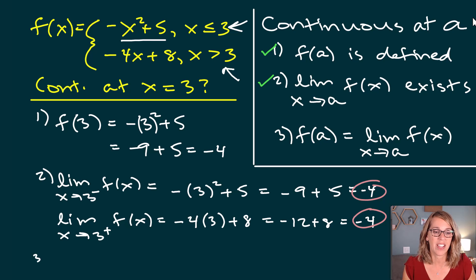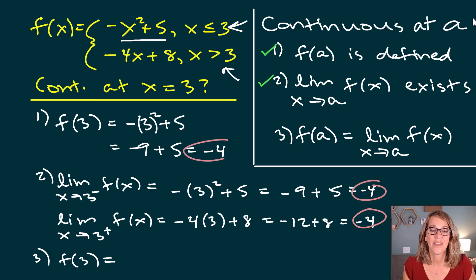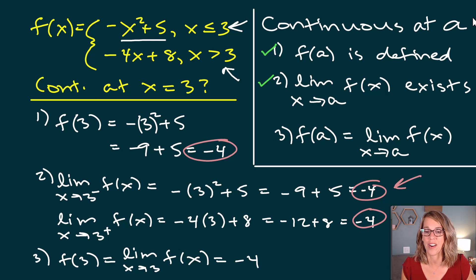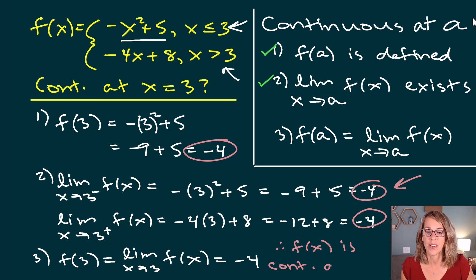Step three: f(3) equals the limit as x approaches 3 of f(x), and both are equal to -4. All three conditions are satisfied, so we can conclude that f(x) is continuous at x = 3.